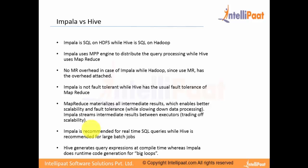Hive generates the query expression at compile time whereas Impala does runtime code generation for big loops. Whenever we write any Hive query, it is converted to MapReduce — it needs to be compiled, converted to a MapReduce script, and then executed on slave nodes. But in Impala, there is no intermediate MapReduce step — the same query is scaled across parallel nodes and processing just happens.